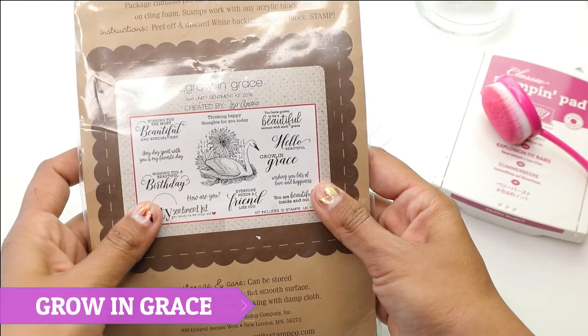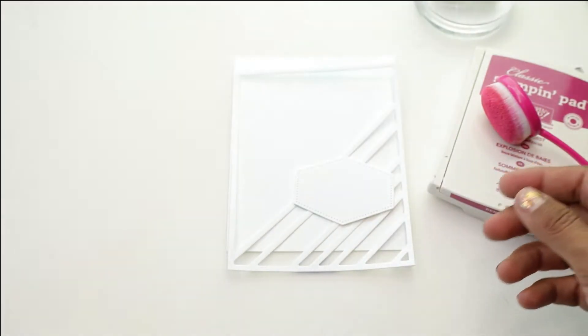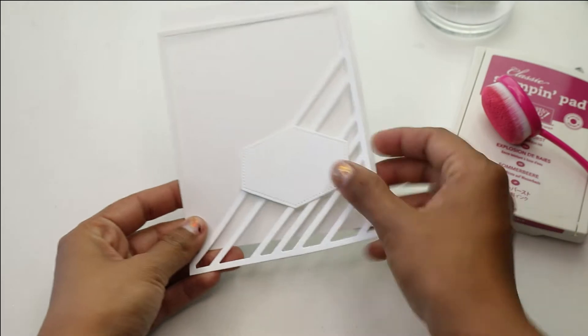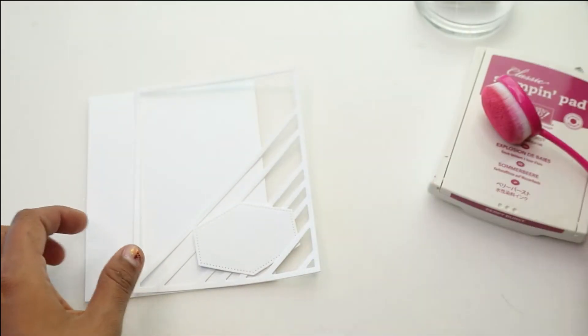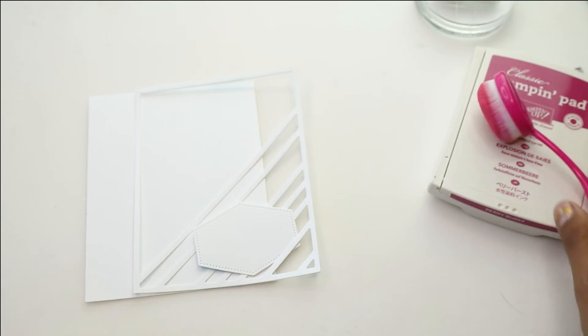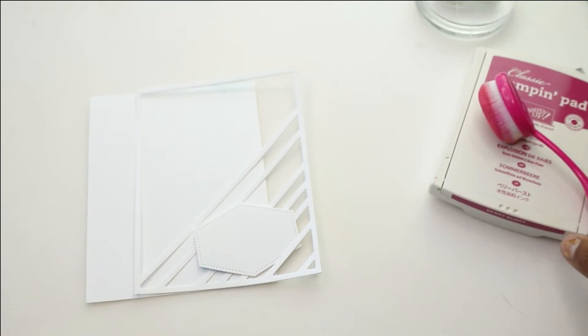And we are using the How Are You, just keeping it nice and simple. Then I thought I would pair that DIY background with a die from Studio Katia, and I just like using background dies. Use whatever you like, but we're gonna keep it nice and clean and simple.